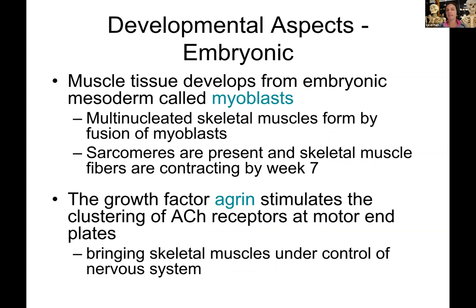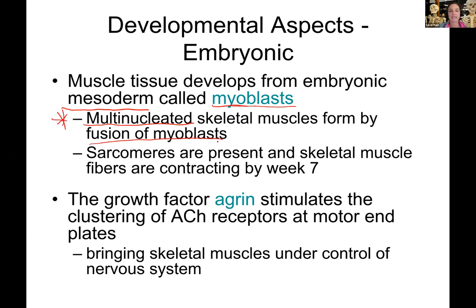The very last thing in this chapter is developmental aspects of muscle. Muscle tissues develop from embryonic tissue called mesoderm — the middle layer of cells in an embryo — which gives rise to connective tissues and muscles. The immature muscle-building cells are called myoblasts (myo = muscle, blast = immature building cell). Skeletal muscle cells form by the fusion of many myoblasts, which is why they are multinucleate. Sarcomeres are typically present around the seventh week of development, meaning the muscle can contract around that time.